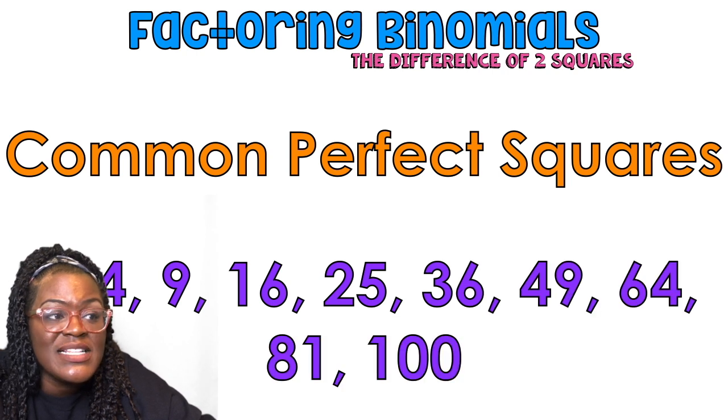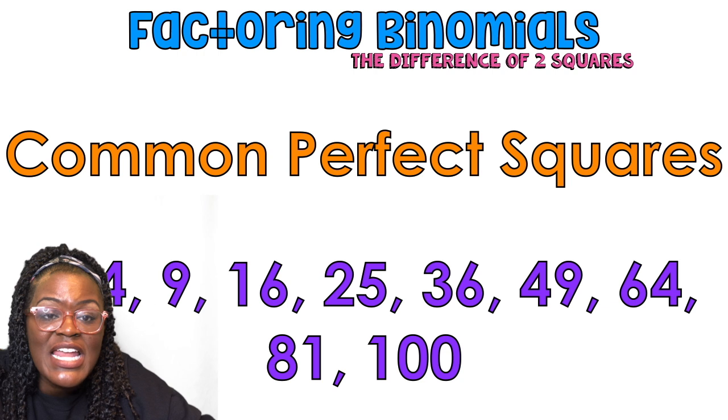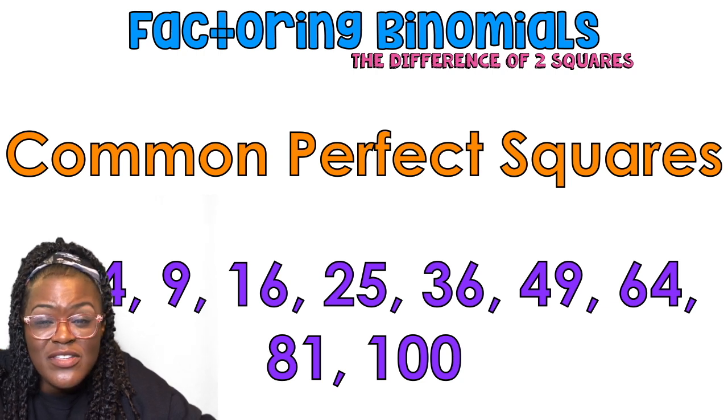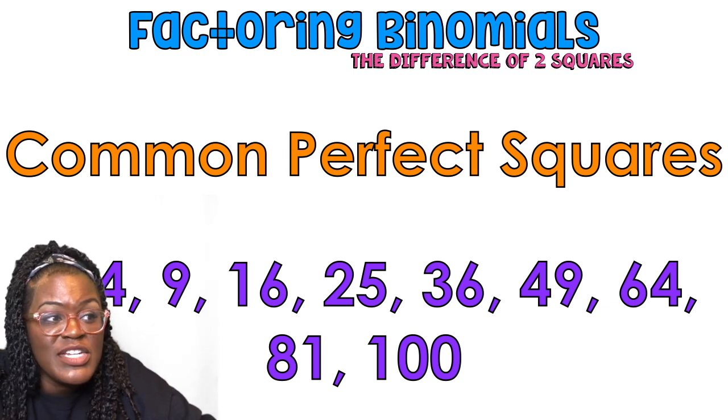Common perfect squares you should know: 1, 4, 9, 16, 25, 36, 49, 64, 81, and 100. You should know that these are perfect squares — they should be easy to recognize and make your life easier.